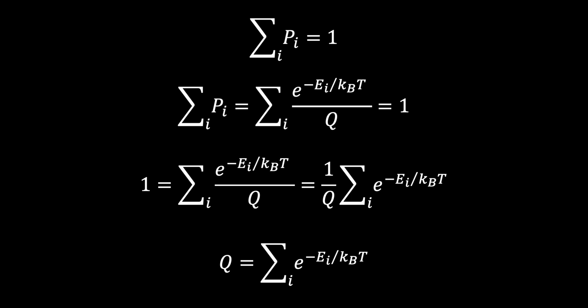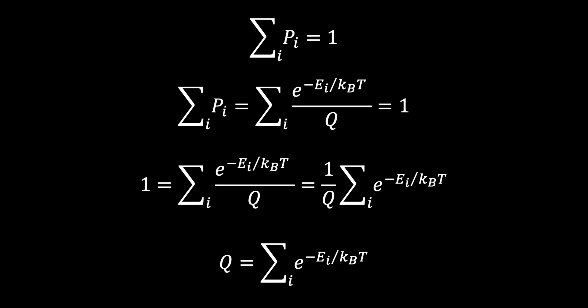Thus, we can write the Boltzmann distribution as the probability for a given state u being equal to e raised to the negative energy of state u divided by kbT, all divided by the summation over all possible states of e raised to the negative energy of each state divided by kbT.